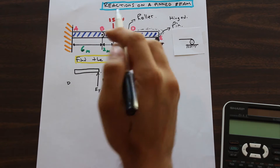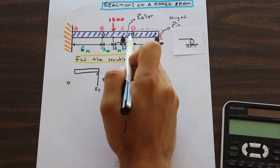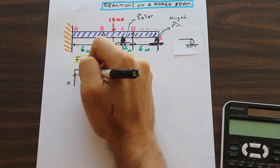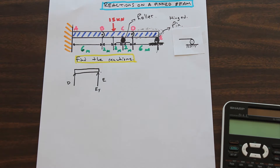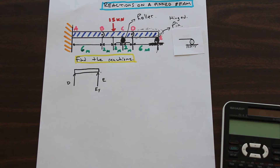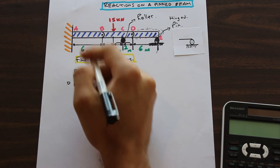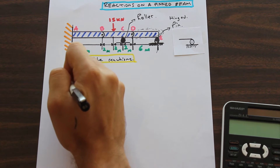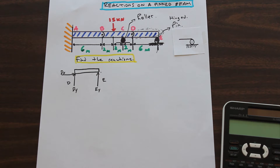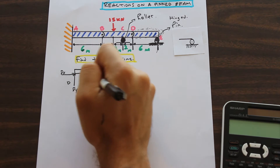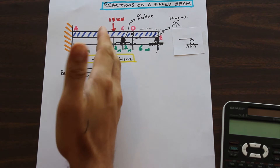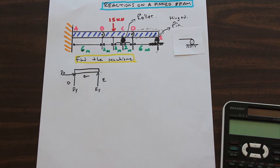So this is the trick: when we have a pin at point D, a pin resists movement in both the Y axis and the X axis. So there's going to be a reaction in Y and also a reaction in X. This distance here is six meters. What we need to do right off the bat is find out what EY, DY, and DX are.